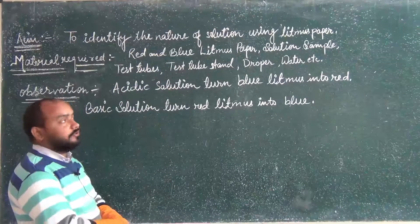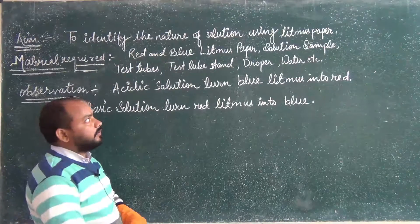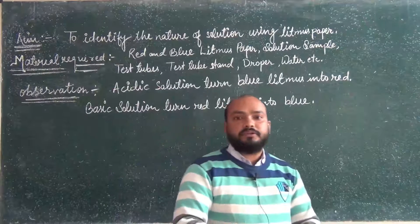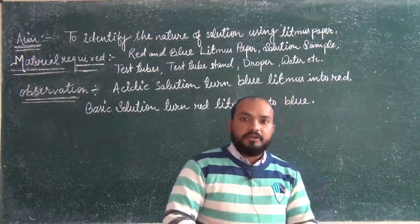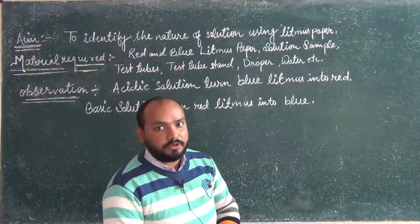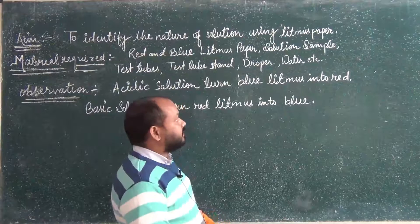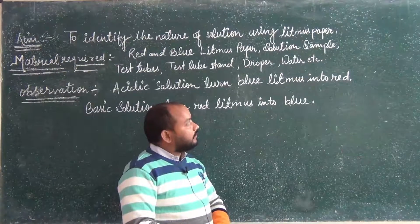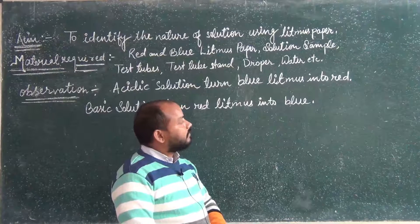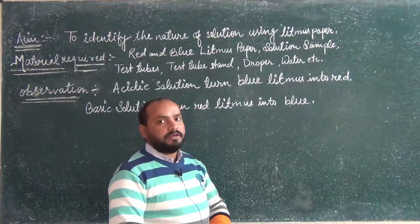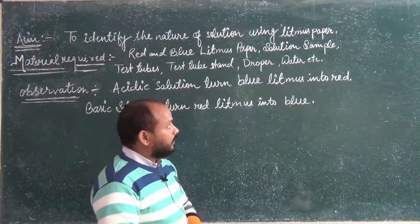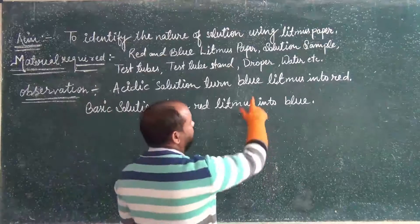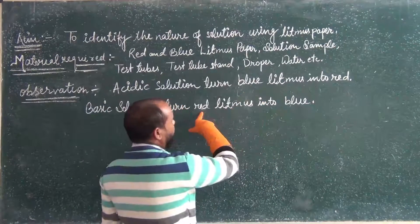In this activity, we are going to learn about the use of litmus paper and how we can test different types of solutions using litmus paper. Litmus paper is extracted from a plant called litmus, and it is available in two different colors: blue litmus paper and red litmus paper.